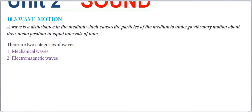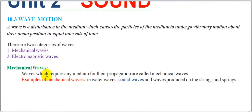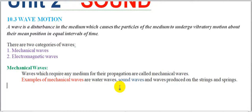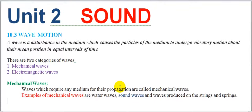Mechanical waves, as we explained, are waves which require any medium for their propagation and are called mechanical waves. Examples of mechanical waves are water waves and sound waves. Sound waves were mentioned under mechanical waves, meaning sound waves are those waves which require a medium to travel through.